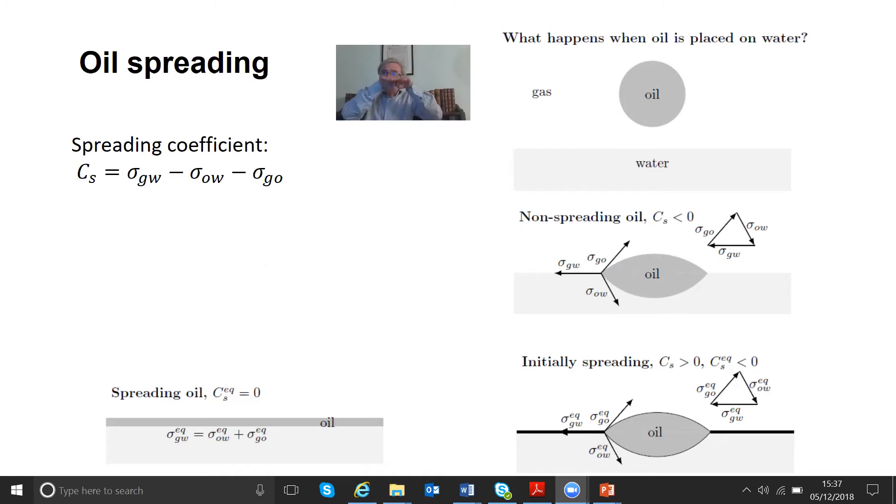You can have something where you form a film, but then excess oil - we're going to look inside a porous media where there's plenty of oil - excess oil actually forms. So in fact it's initially spreading, but the equilibrium spreading coverage equilibrium is actually negative because the gas-water interfacial tension is reduced.